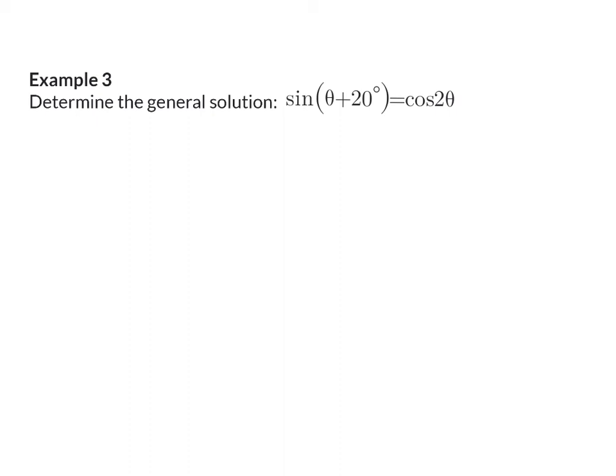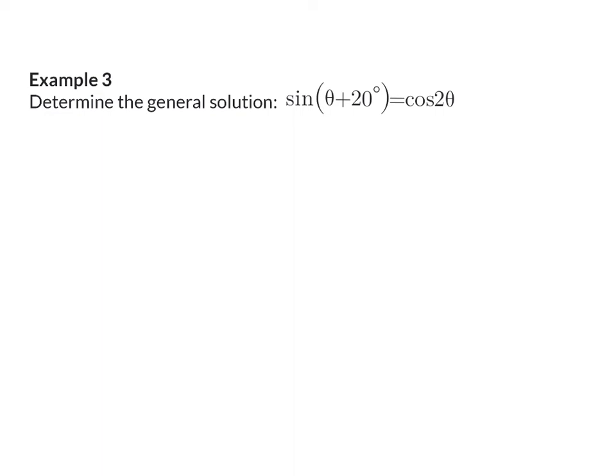Example 3: Determine the general solution of sin(θ + 20) equal to cos(2θ). Here we have sin and cos, so you might think of using type 2, but the angles are different. We can only change into tan of theta if the sin and cos functions both have the same angle. So when the angles are different, like in this case, we need a new plan: manipulate one of the two trig functions to become the same as the other.